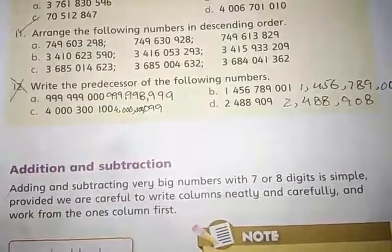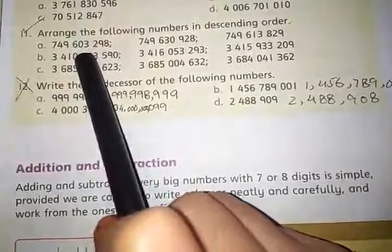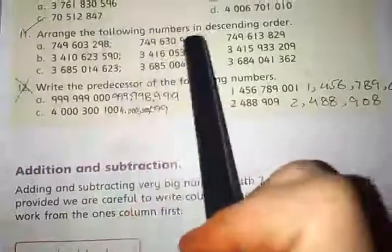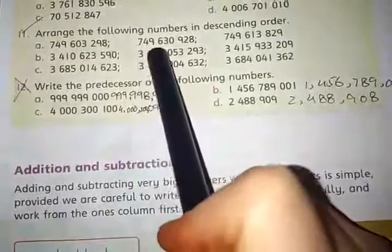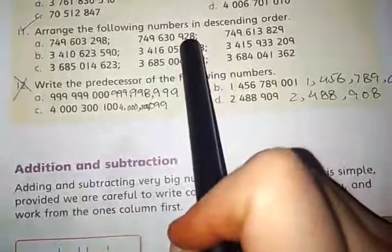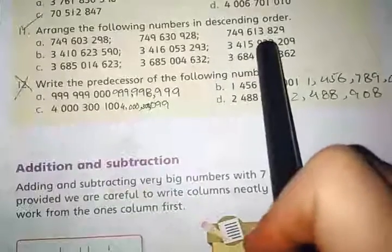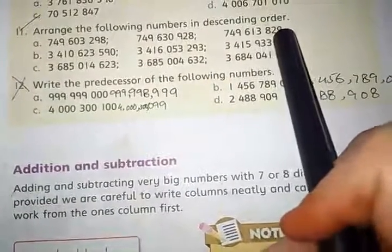Number A is 749,603,298; 749,630,928; 749,613,829.